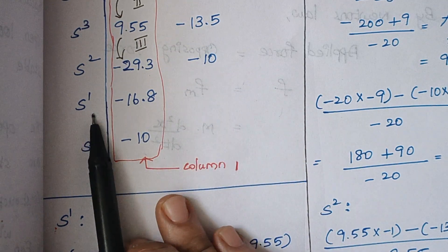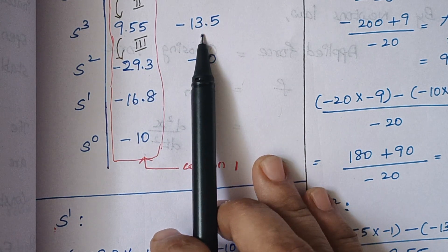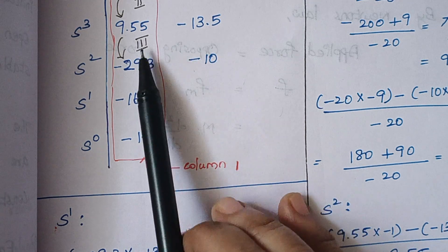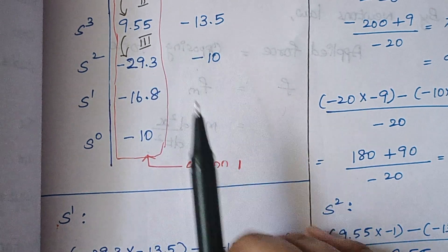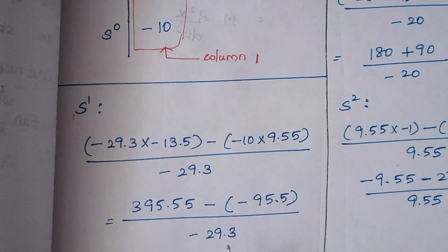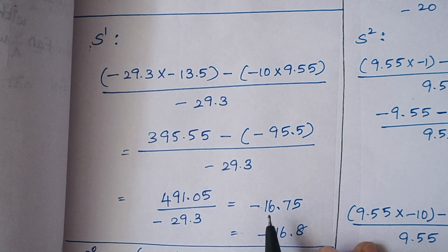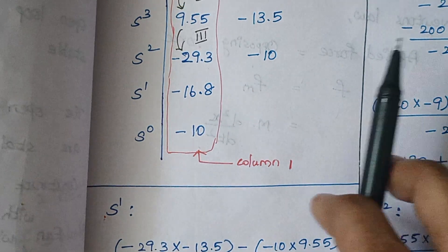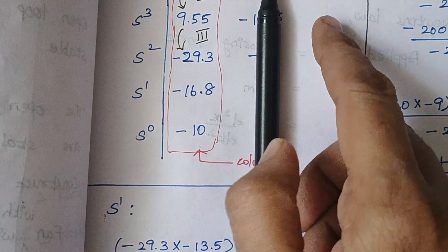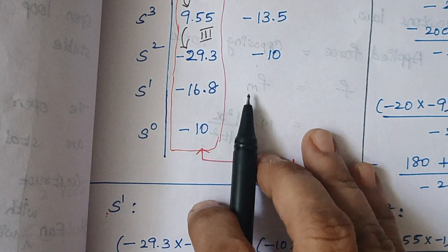Next we find the S^1 row. The first element is: (−29.3 × (−13.5) − (−10) × 9.55) / (−29.3). Solving this gives approximately −16.75, which we round to −16.8. The second element: hiding this column, there are no numbers, so it is 0. So the S^1 row has −16.8 and 0.